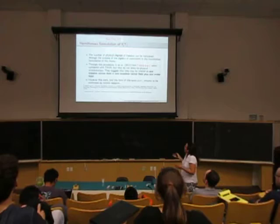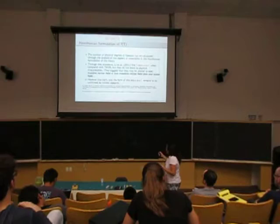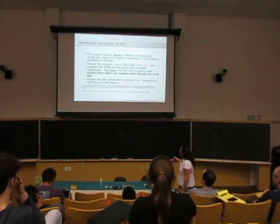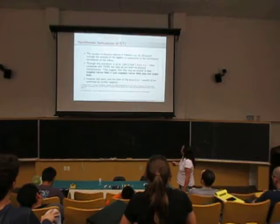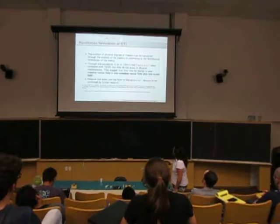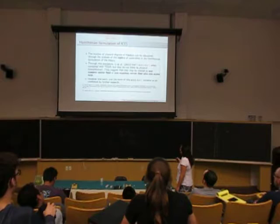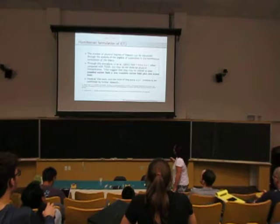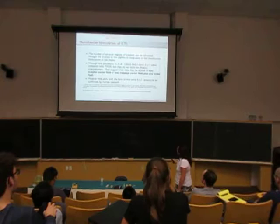You can perform the Hamiltonian formulation of the theory, and through this procedure calculate the degrees of freedom of the theory. This has been done in 2011, and the authors find that there are three extra degrees of freedom. That means five degrees of freedom, two from general relativity plus three extra. And they suggest that this extra degrees of freedom may be related to a massive vector field, or one massless vector field plus one scalar field. However, the transformation between f of T and these degrees of freedom is not very clear. So, this has to be confirmed by further research.